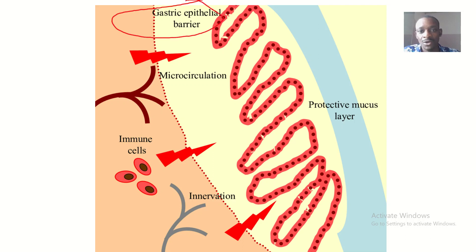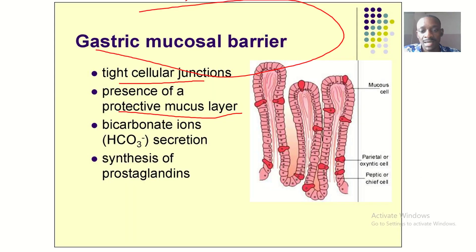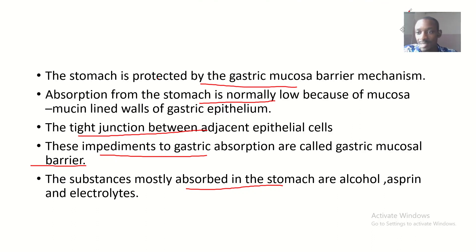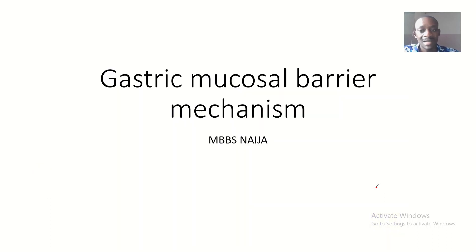To summarize: the gastric epithelial barrier, or gastric mucosal barrier, protects the stomach from the action of acids. It also limits absorption — not much absorption is done in the stomach; only alcohol, aspirin, and electrolytes are absorbed there. That's the gastric mucosal barrier mechanism. See you in the next tutorial.